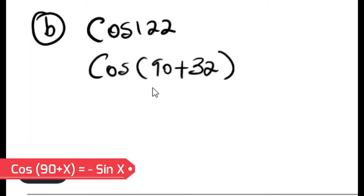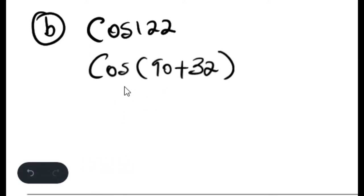Due to co-ratios, this automatically changes to sine. But since cosine is negative in the second quadrant, it affects the value of sine. So this would be -sin 32°. And as we know, sin 32° = t, so the answer is -t.